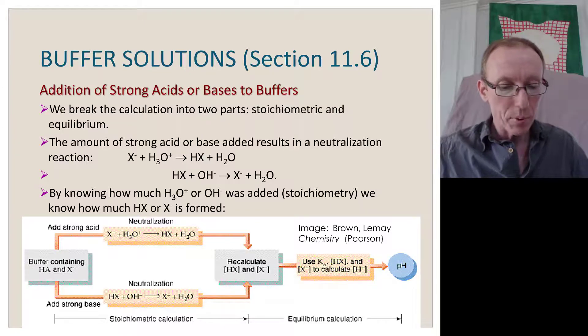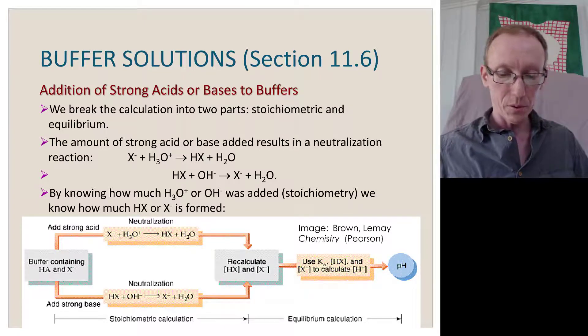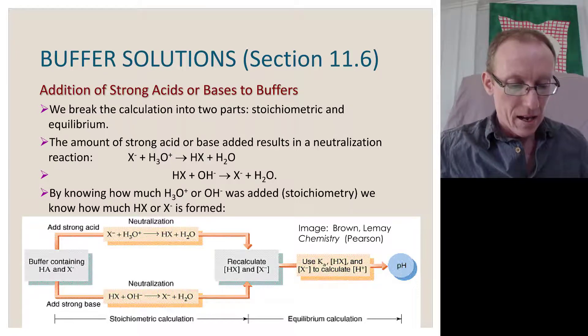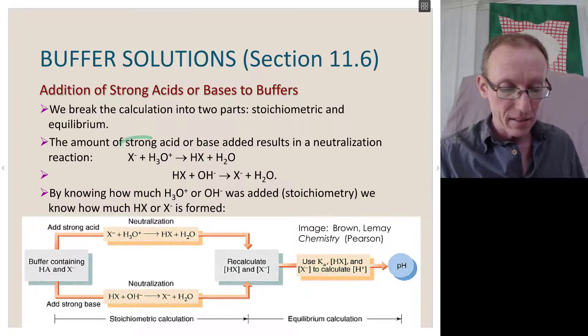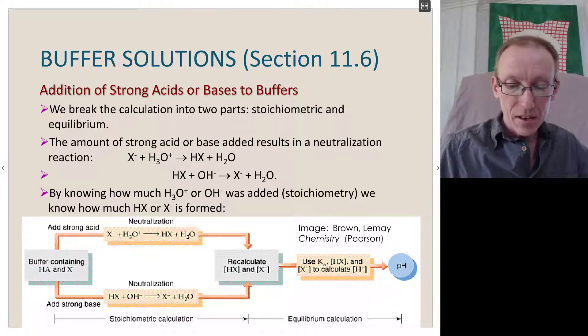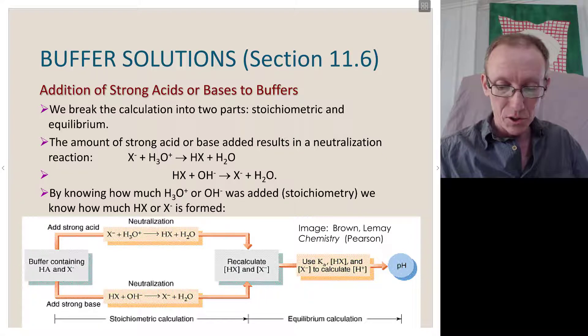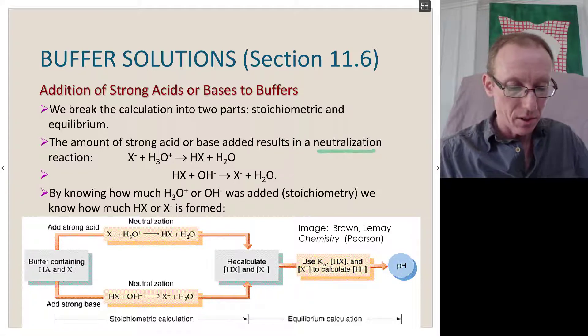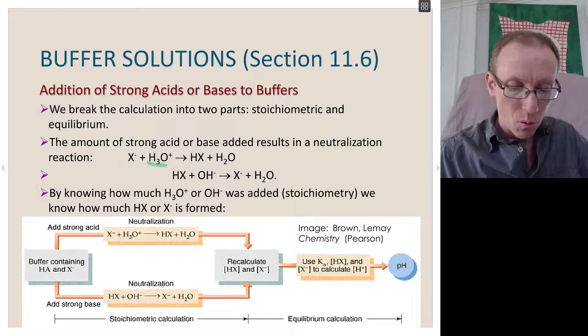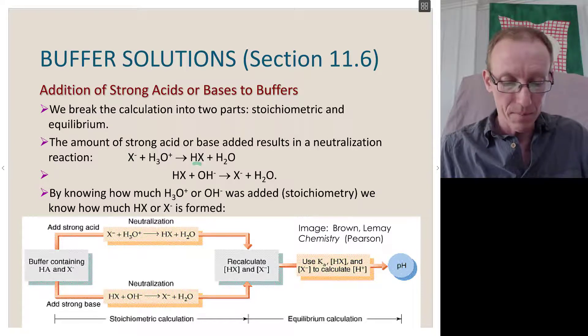When we break the calculation into its two parts, there's a stoichiometric and an equilibrium part. The amount of the strong acid or base that we add to this buffer solution results in a neutralization reaction. If we have some of this conjugate base and we add a strong acid to it, we'll get that being neutralized to give our weak acid plus water.